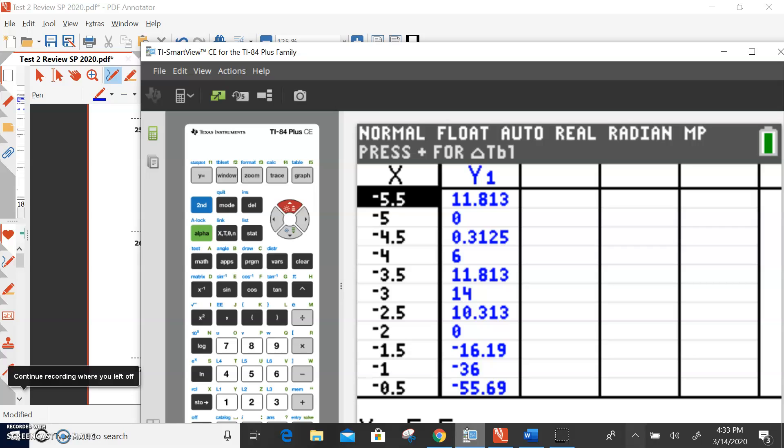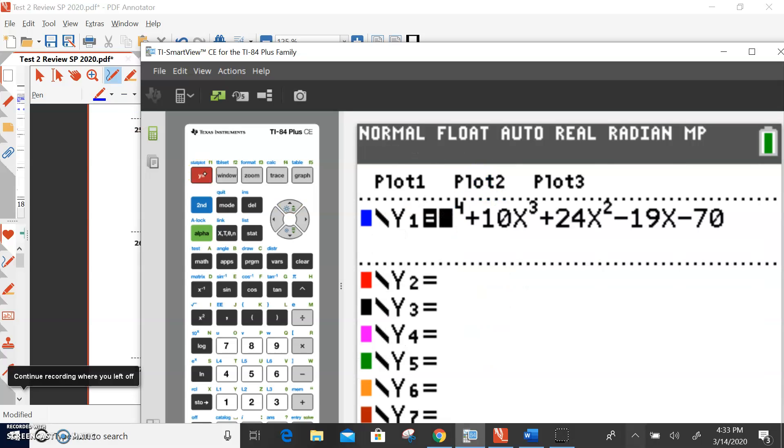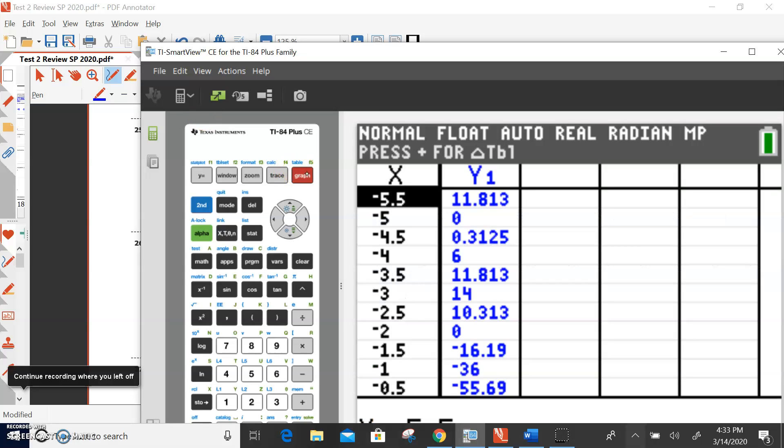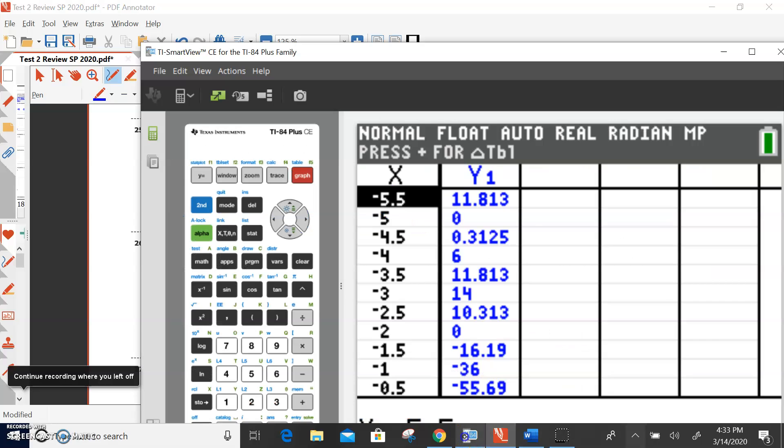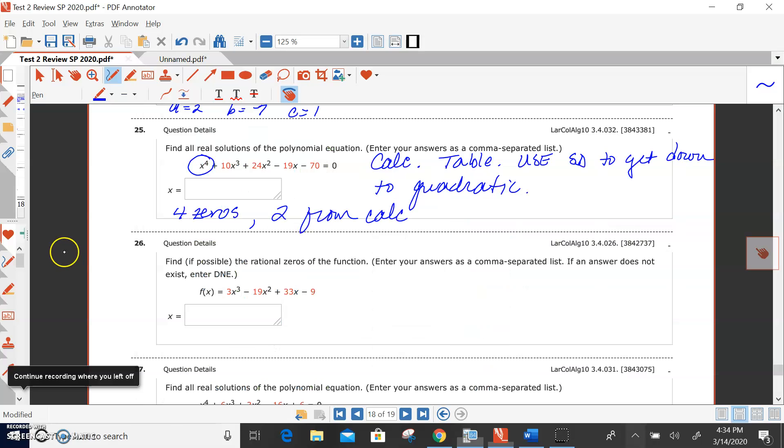When we look at our calculator, we will go put it under y equals, then take a look at the table, and I notice automatically I've got two zeros, one at negative 5, and one at negative 2. Remember, you're looking for a zero in the y position. So this is going to get me started. All I need is these two to get started, because it's a fourth degree polynomial. There are going to be four zeros. I've got two from the calculator, which means there's only two left to find, and that means I've got a quadratic. So the two from the calculator were negative 5 and negative 2.